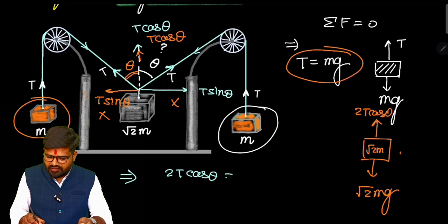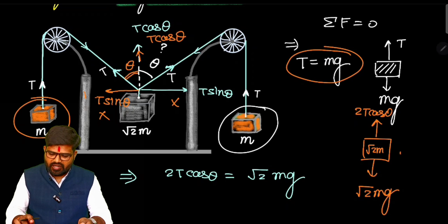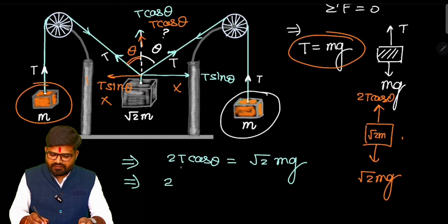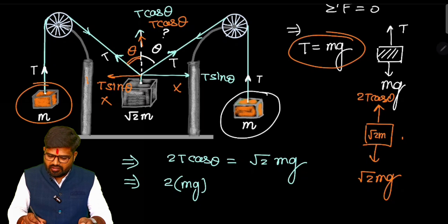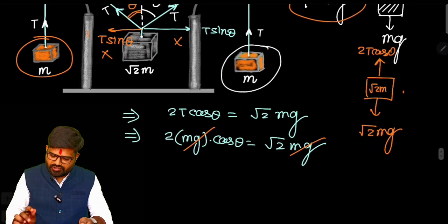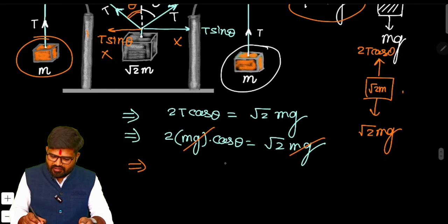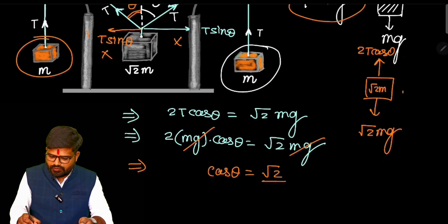So we can say that on this bigger block the force acting vertically up 2T cos theta cancels with its weight √2mg. That is 2 times of T. In place of T let's put its value which we got as mg. 2mg cos theta equals √2mg. Both sides mg cancels out. We can say that cos theta equals √2 by 2, which comes to 1 by √2.